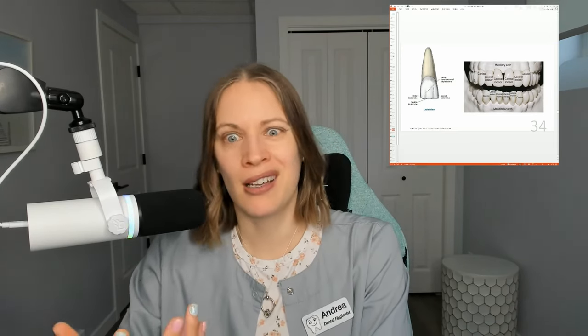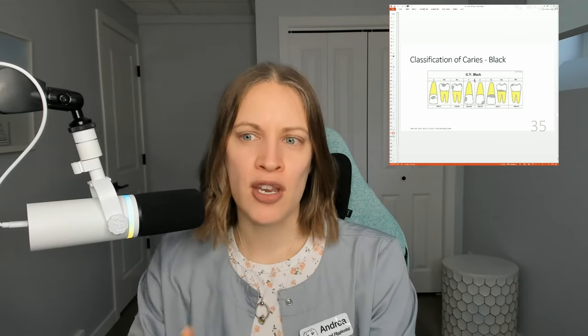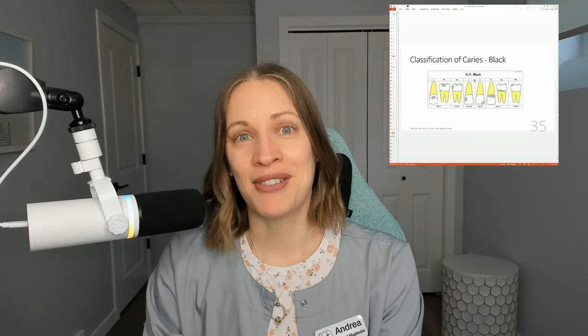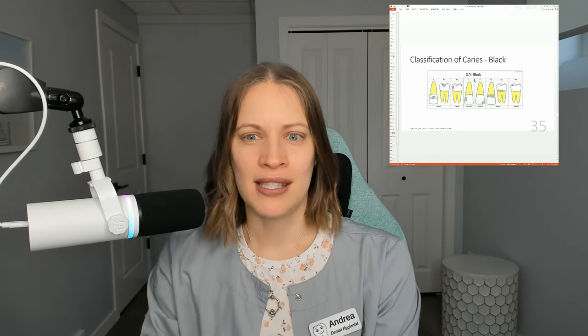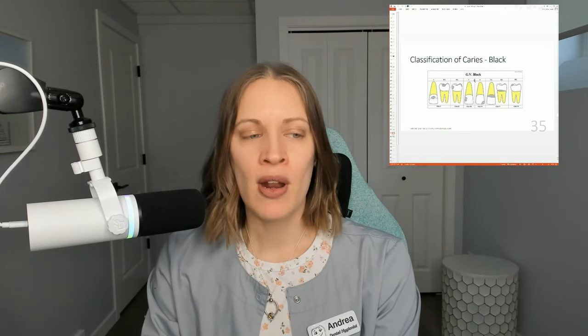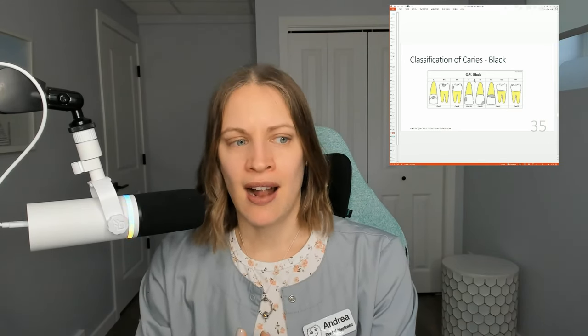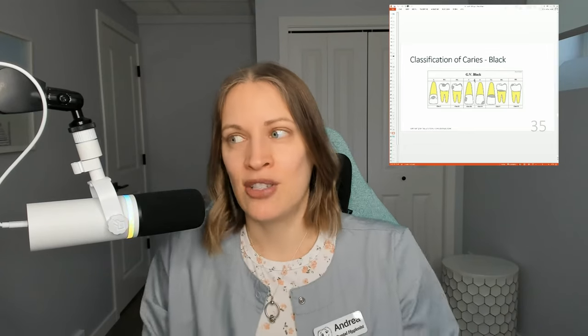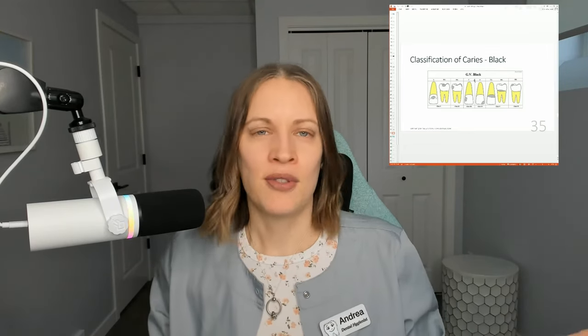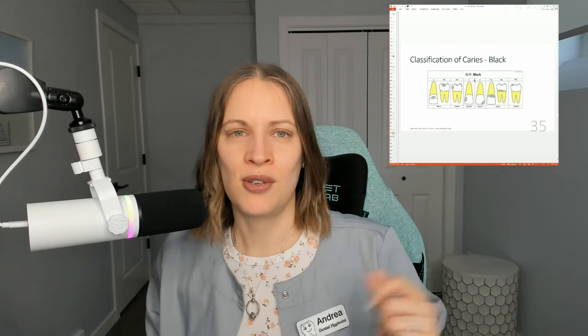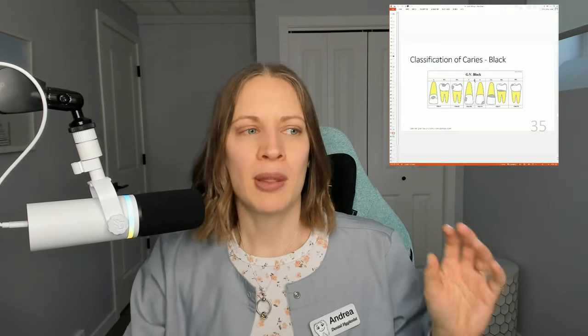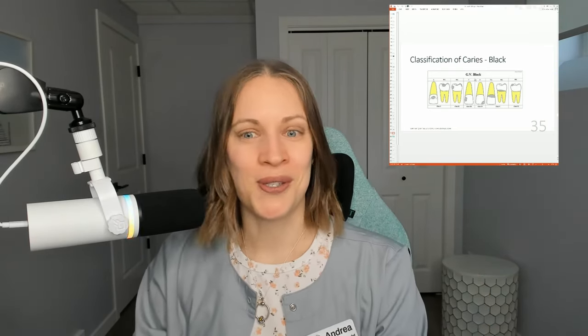We also go over things like the centrals, the laterals, the canines, the premolars, and the bicuspids. And don't forget Black's classification of caries — this is something I find that students skip over and forget about. In the offices I was in, we didn't even use this; they simply said this tooth has an interproximal cavity, or a cavity on the mesial and the occlusal. But Black's classification is different, so you do need to know it. We go over it in our classes.